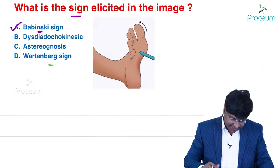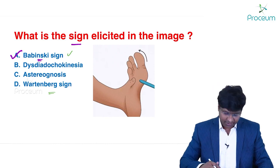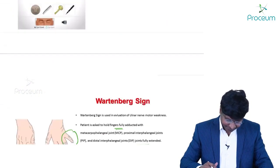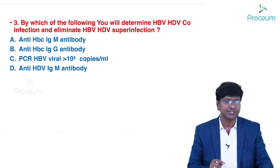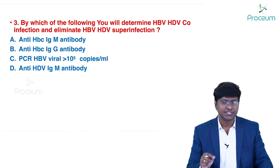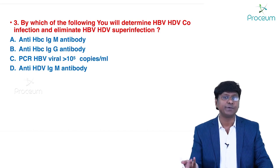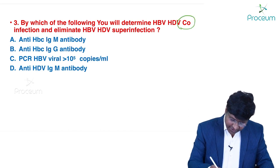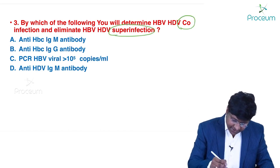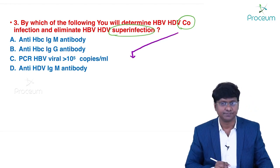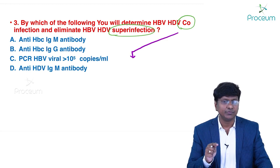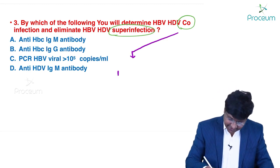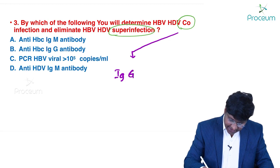So in the Babinski question, the answer is Babinski sign. Moving to the next question: by which test can you determine HBV-HDV co-infection and eliminate HBV-HDV super-infection? In co-infection, the serology is IgG anti-HBC, indicating chronic infection. Super-infection refers to an acute presentation — where there is an underlying HBV infection upon which HDV is superimposed, or vice versa.